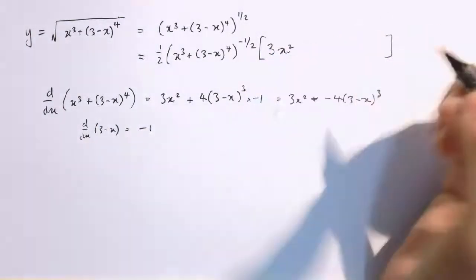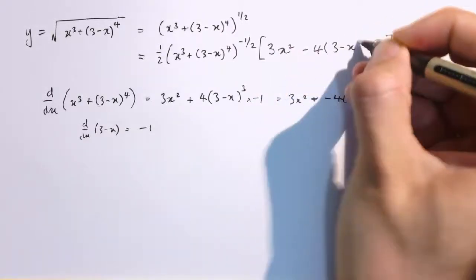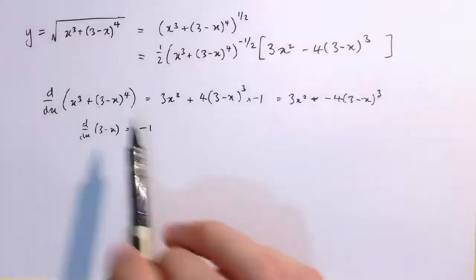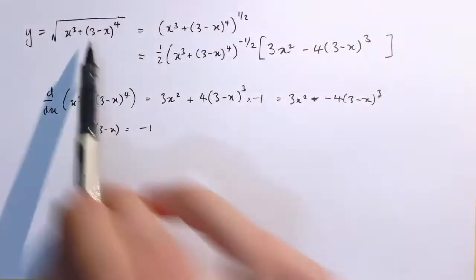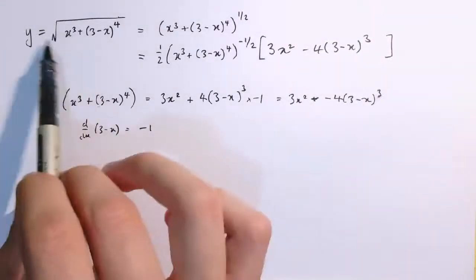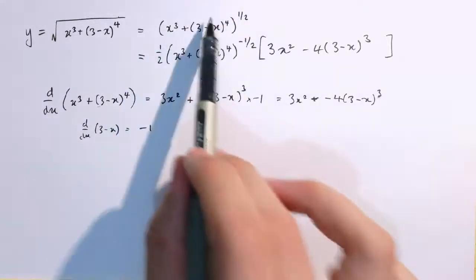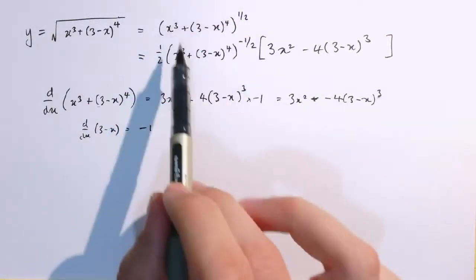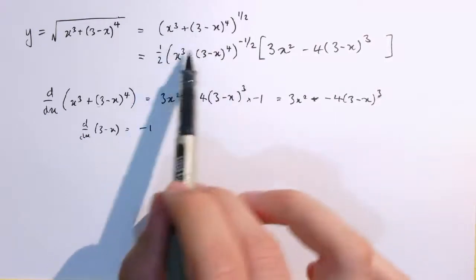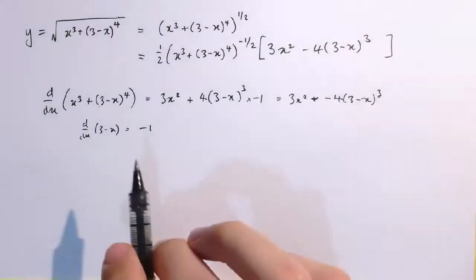So we've got 3x squared minus 4 times 3 minus x cubed. Here I had to use the chain rule twice, because when I applied the chain rule and looked at the inside function, I could still differentiate it, but it needed the chain rule applied again to be able to do that differentiation.